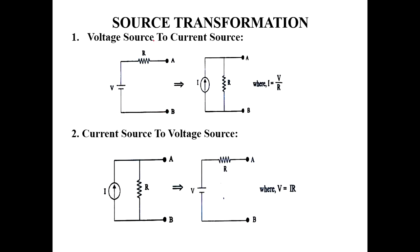Source transformation: voltage source to current source conversion. The voltage source is always in series with resistance. Using Ohm's law, V equals I times R, so I equals V divided by R. To convert, we draw the current source in parallel with the resistance. Voltage is series with resistance; current is parallel with resistance.